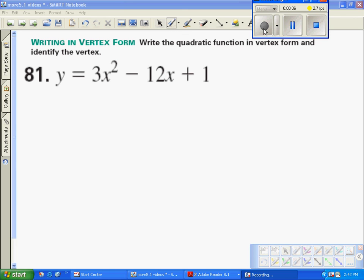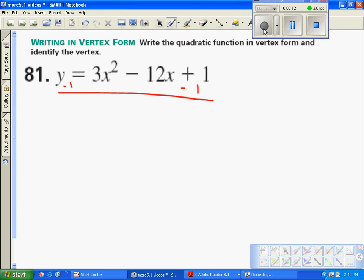The problem is we have a leading coefficient, so we're going to get rid of the 1 first. We'll subtract 1 from both sides, so we get y minus 1 equals 3x squared minus 12x.